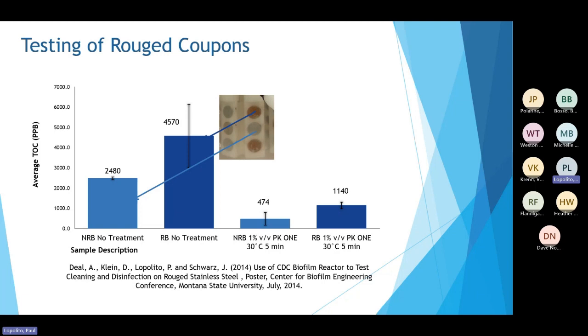and when we looked at non-rouged coupons without treatment, so it's just exposed to the water, you can see that what was the testing in PPM, PPB. And then when we did the rouged coupons with no treatment, so it was just exposed to water, you can see how much bigger the numbers were. Also, when the non-rouged coupons were exposed to the alkaline detergent at 30C for five minutes at 1%, you can see the number was really low and the cleaning was really good.